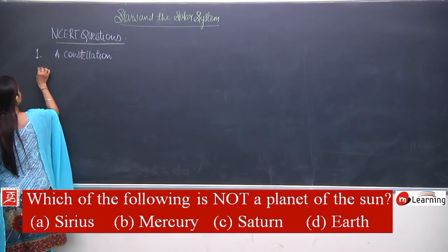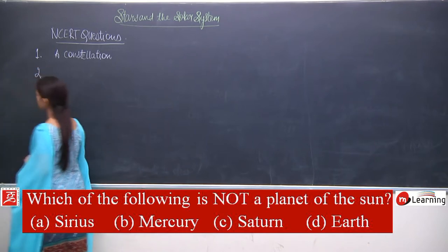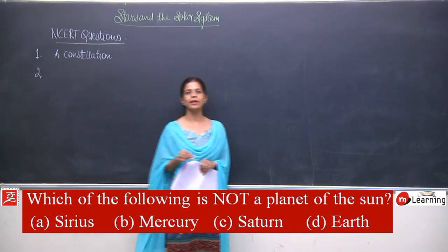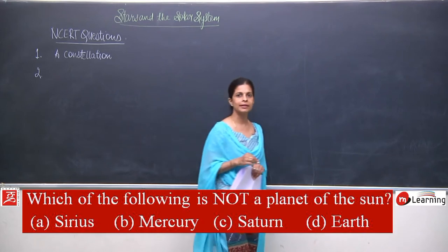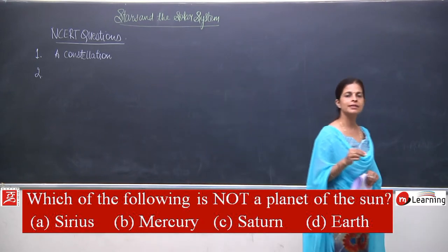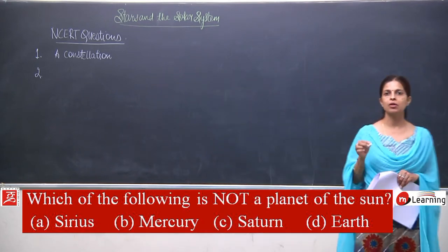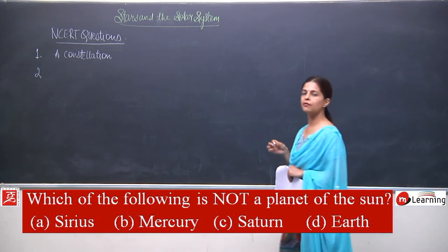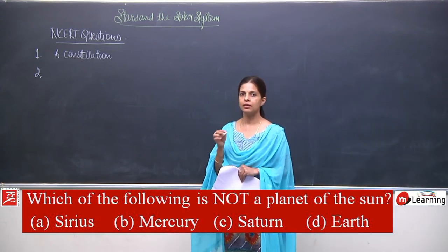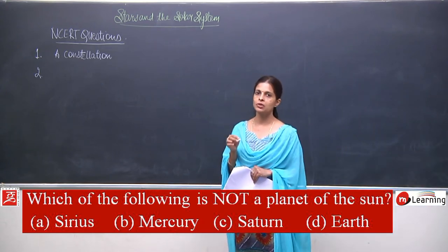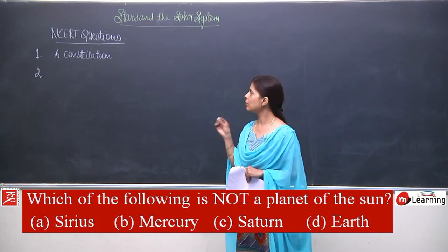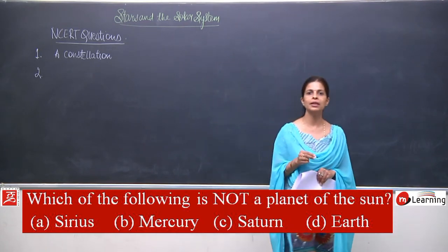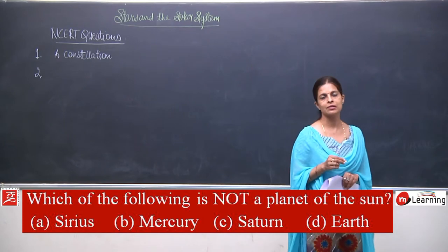A constellation is the correct answer for question number 1. The question asks which option is not part of the solar system. Obviously, constellations do not come under the category of the solar system.